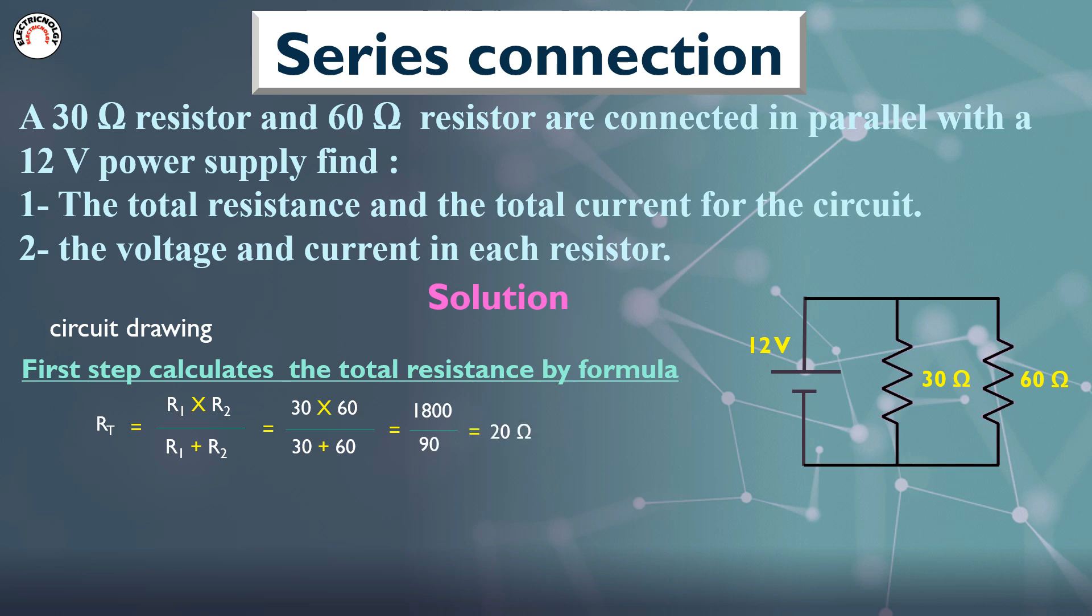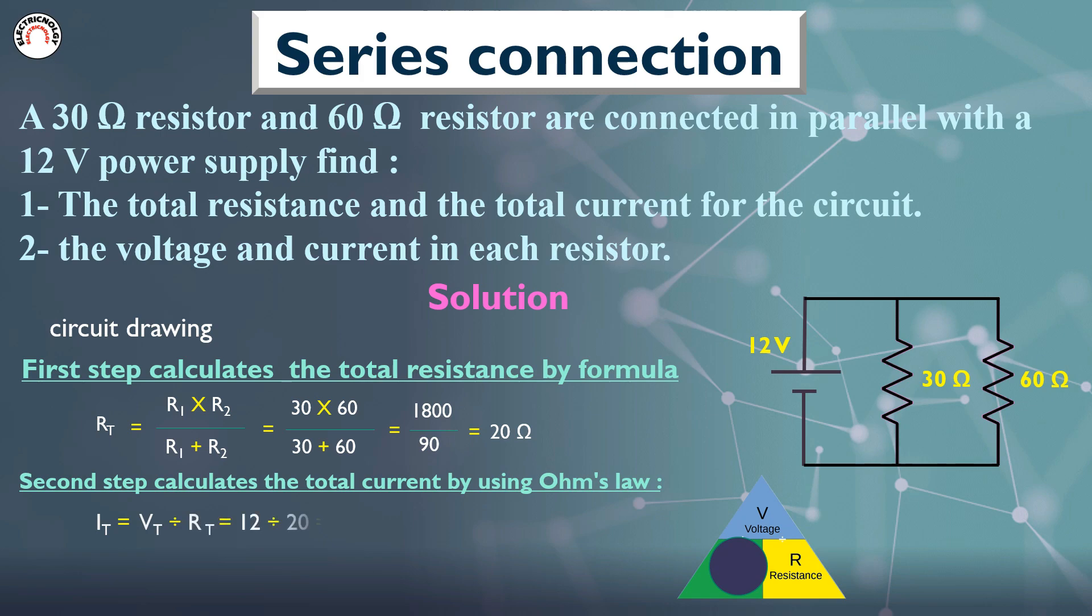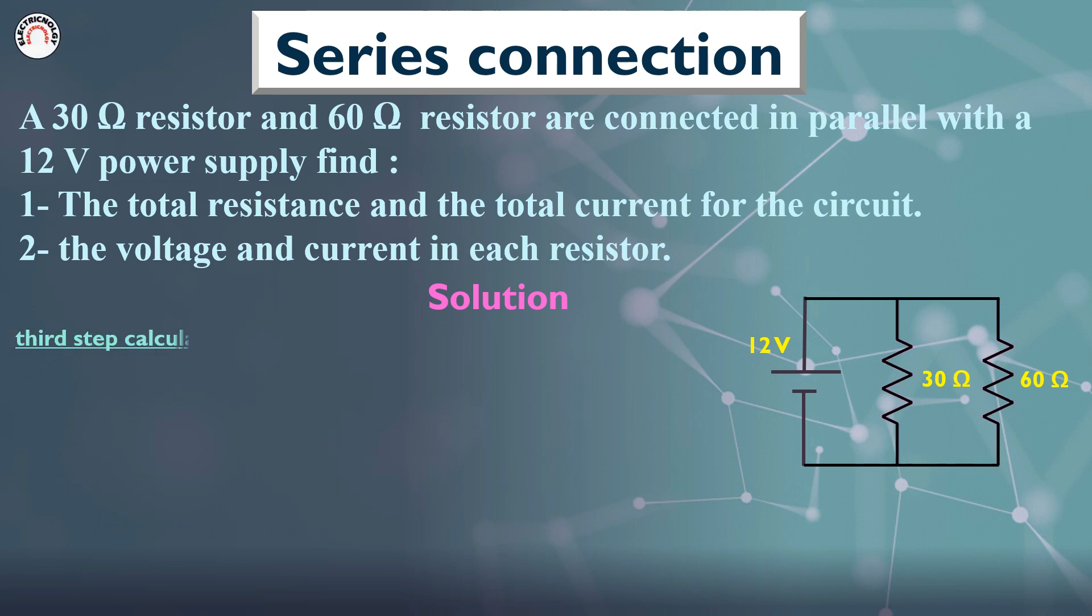Second step calculates the total current by using Ohm's law. Third step calculates the voltage drop and current in each resistor.